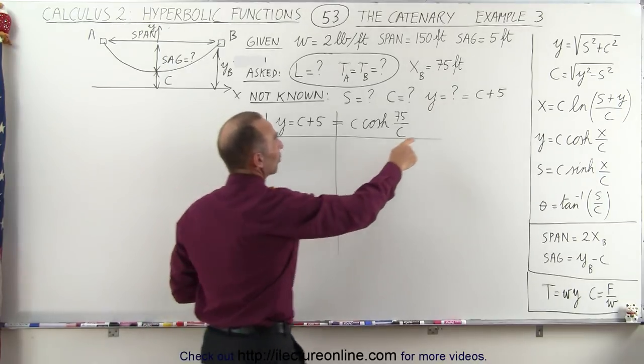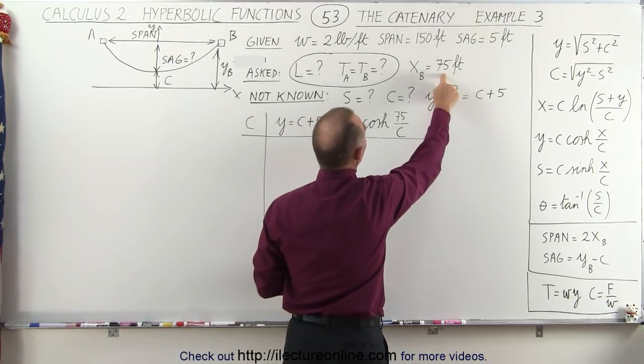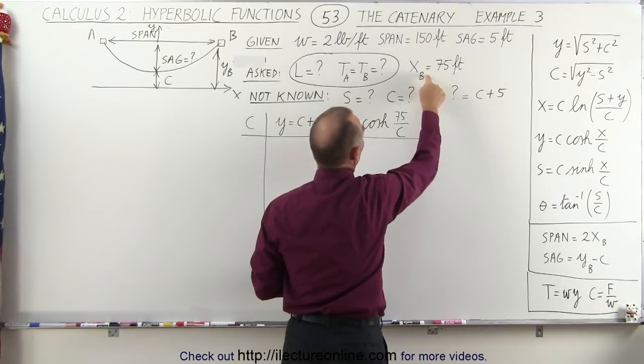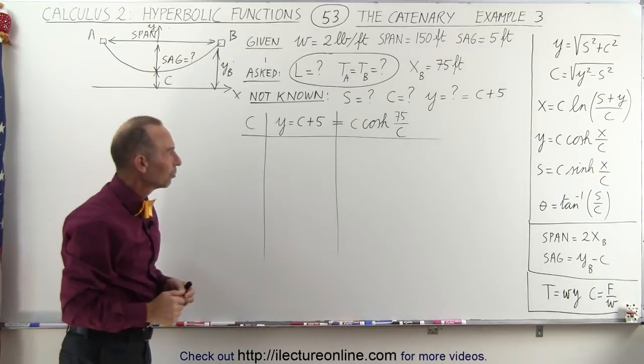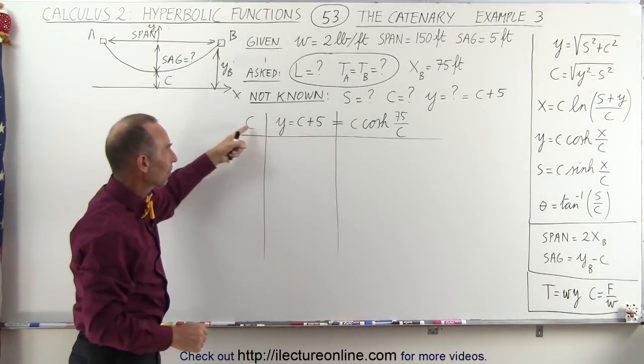And we know that x must be equal to 75 because x is half the span when we go from the middle to the support point at the edge. So we're going to use this relationship right here.